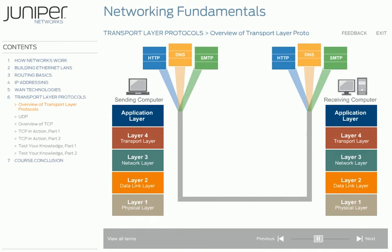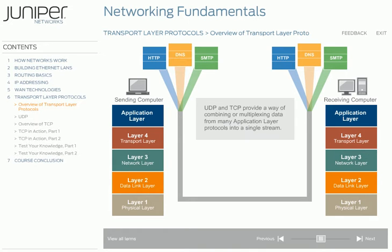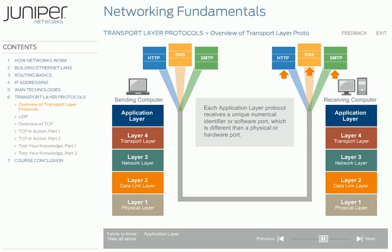Remember the concept of multiplexing from the last section on WANs? Multiplexing is where multiple sources of data, such as phones, fax, and computers, combine into a single stream over a single line. The transport layer also multiplexes data. UDP and TCP provide a way of combining or multiplexing data from many application programs into a single stream using the same IP address. Each application layer protocol receives a unique numerical identifier, or software port, which is different from a physical or hardware port. UDP and TCP use these software ports to route data to the appropriate application. Common application layer protocols and their associated ports are shown.